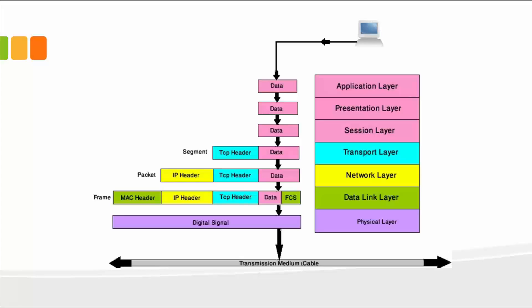And then of course, the data link layer also divides the actual data into a frame, which contains the MAC address, IP address, TCP header, data, and FCS.